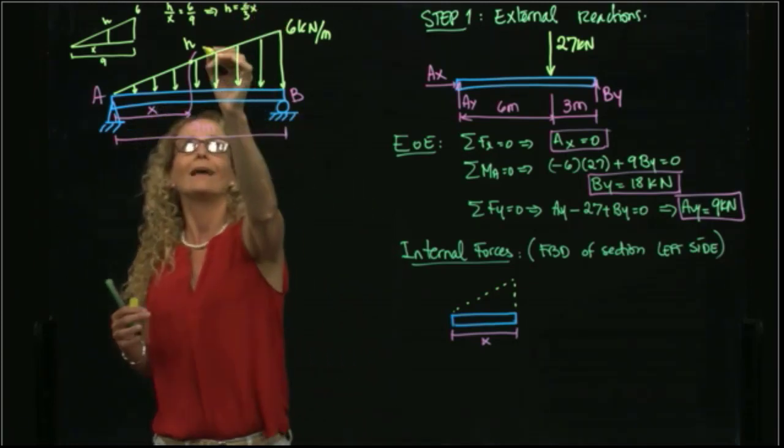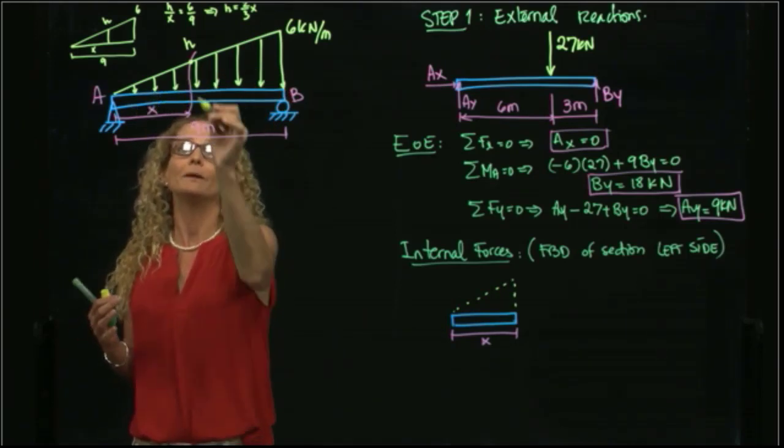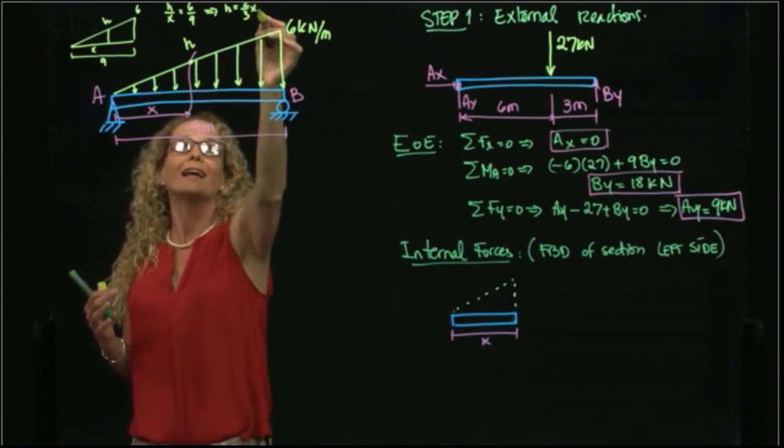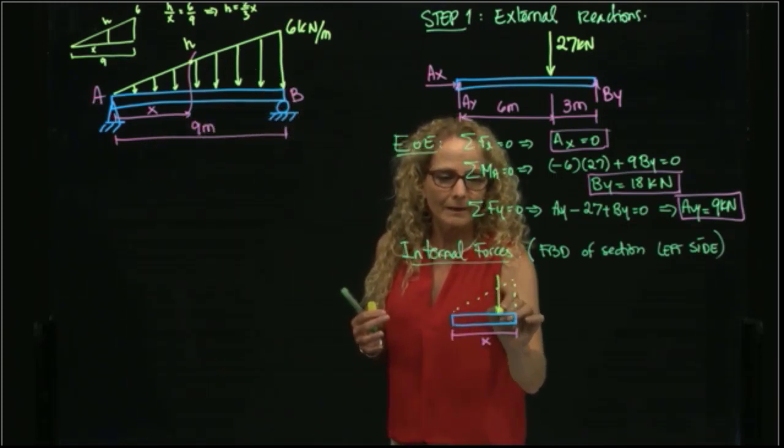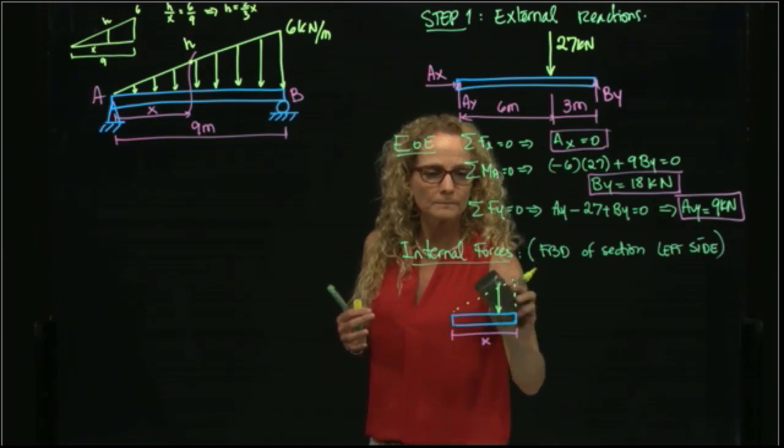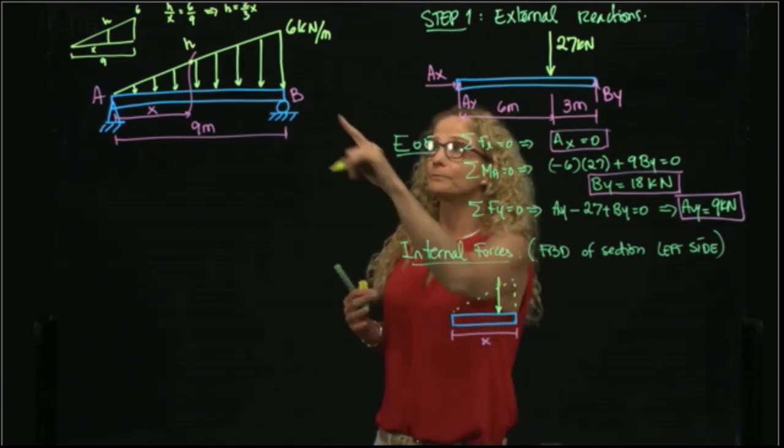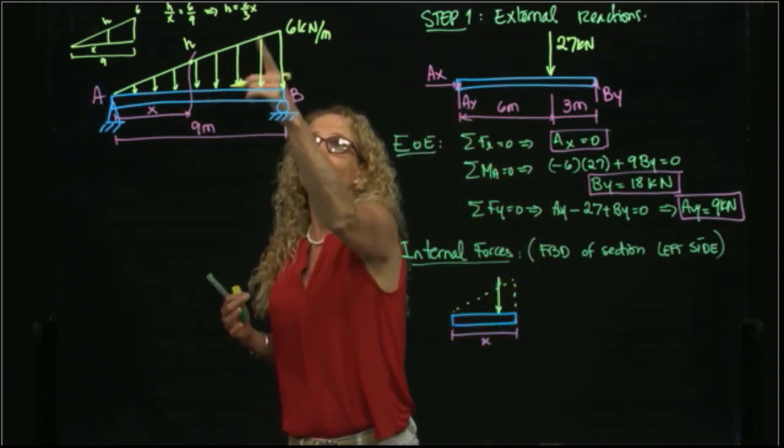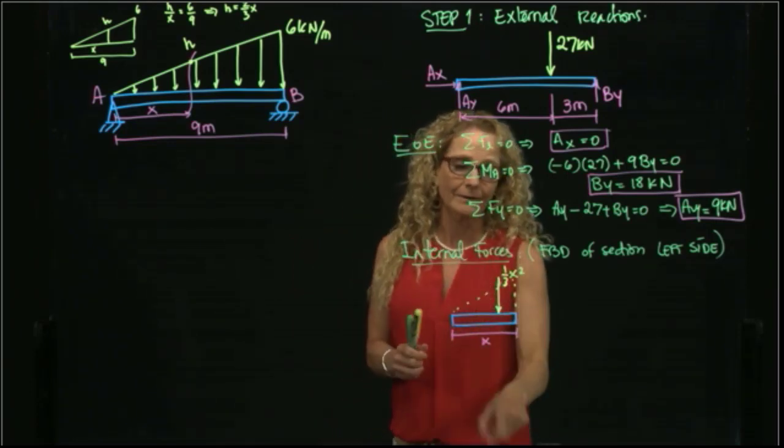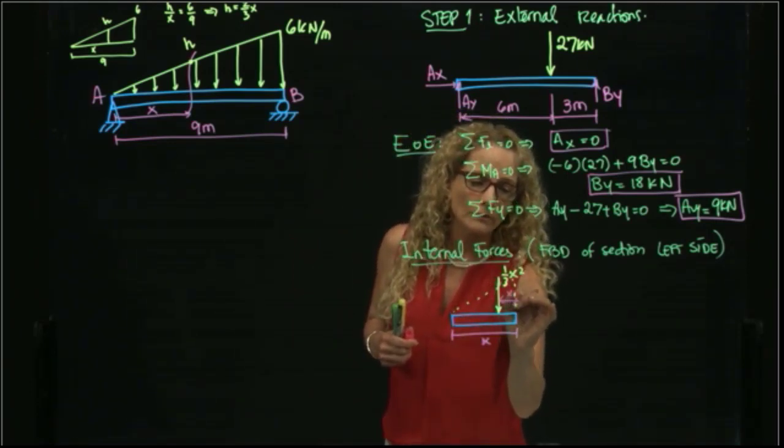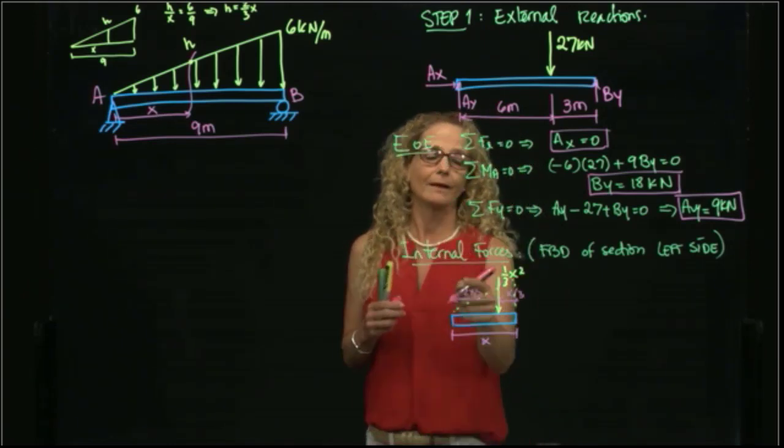So I can say that this H over here is two-thirds X. So the area under that curve will be base, that is X, times height, which is two-thirds X, divided by 2. So I can place it as a single force. The value of that single force will be two-thirds X times X divided by 2, so it's one-third X squared. And where would that be located? At one-third of the heavy side, or two-thirds of the skinny side.